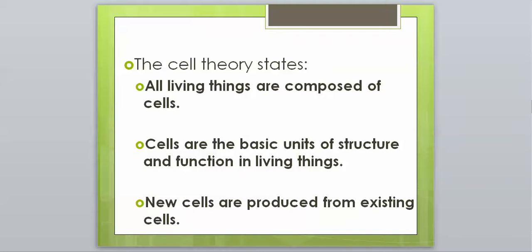The cell theory states: all living things are composed of cells. Cells are the basic unit of structure and function in living things. And new cells are produced from existing cells. These are the three points of the cell theory to remember.